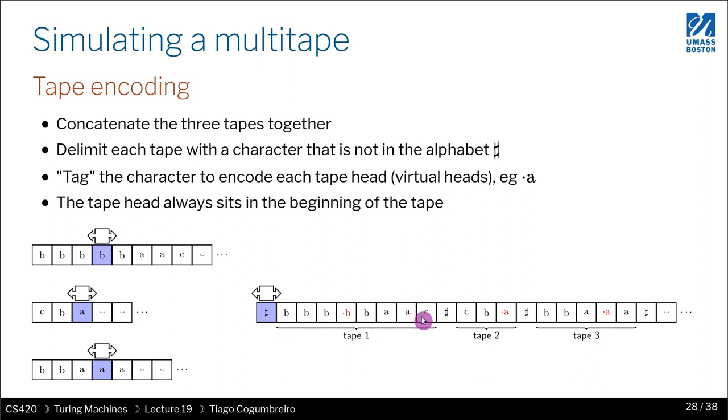And I would encode this tape to be this tape. Location here, I just use the signed B to represent where I am in my tape. And then how do I perform one step?